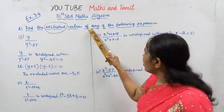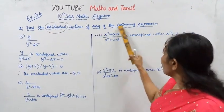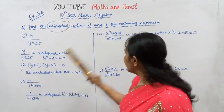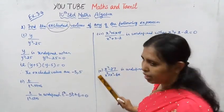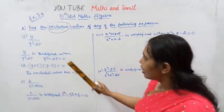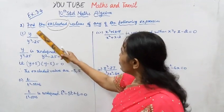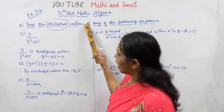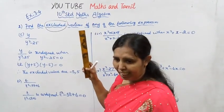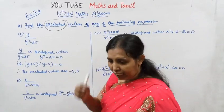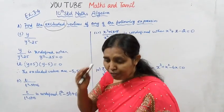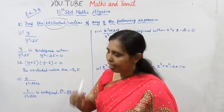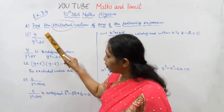Find the excluded values, if any, of the following expressions. There are four subdivisions. For each subdivision, find the excluded values — this is a two-mark question.